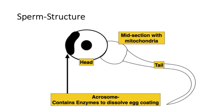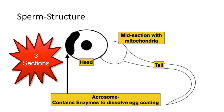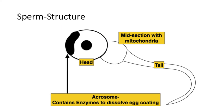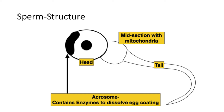It's important that you can draw and label the sperm. It's made up of three sections. The head contains the nucleus and at the front there is the acrosome, which contains enzymes that dissolve the coating of the female egg so the sperm can enter. The midsection contains many mitochondria — the powerhouses of the cell — which provide all the energy to help the tail move.